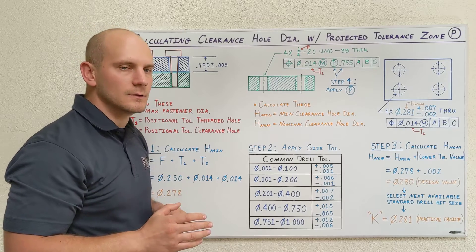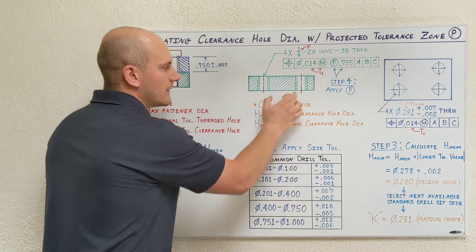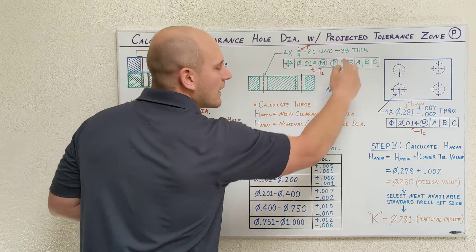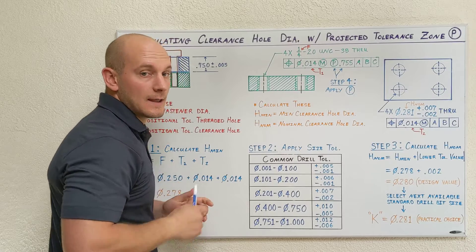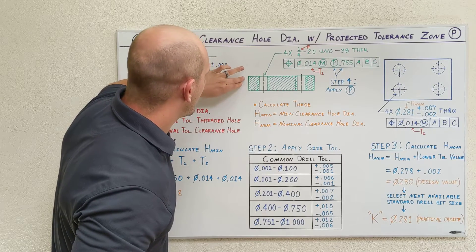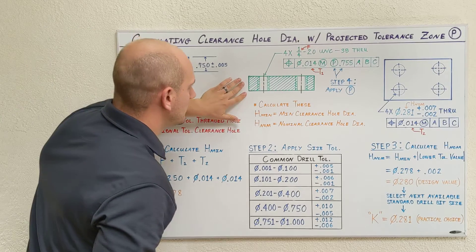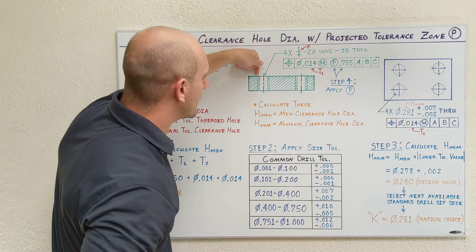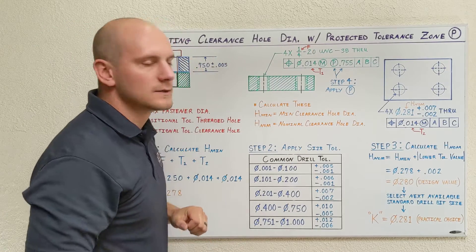The last thing we need to do is make sure we have a section view of the part with the threaded features. We need to show the axes of the threaded holes, and with our threaded hole call-out, we need to point to the axis of one of those threaded features. Also make sure you point to the surface of this part that's going to be mated up to the part that has the clearance holes. Section view, point to the axis of one of those threaded holes, and point to the mating surface. And that's projected tolerance zone.